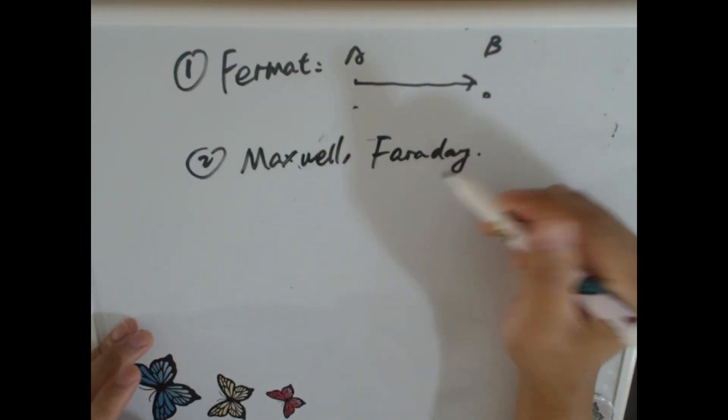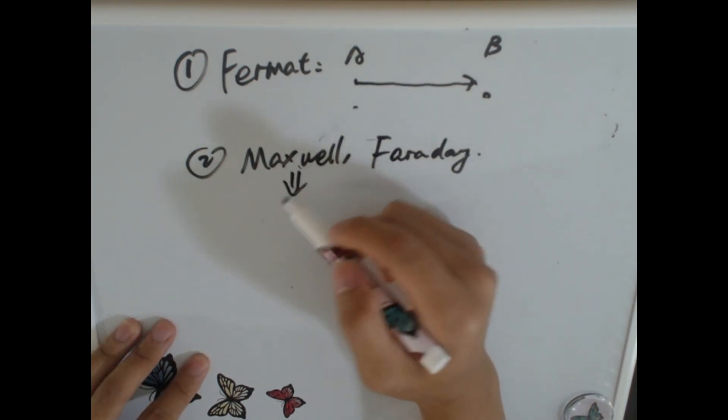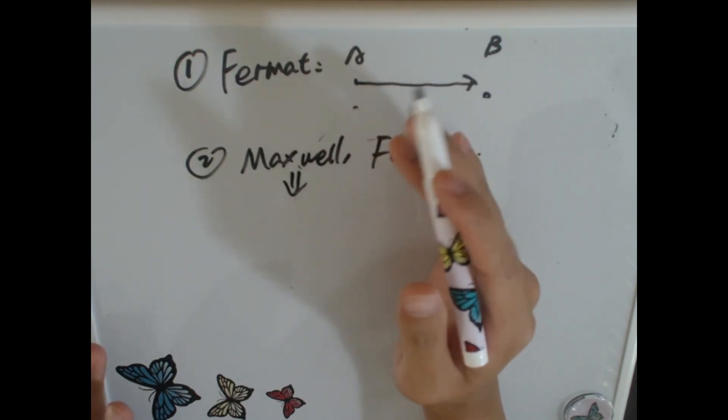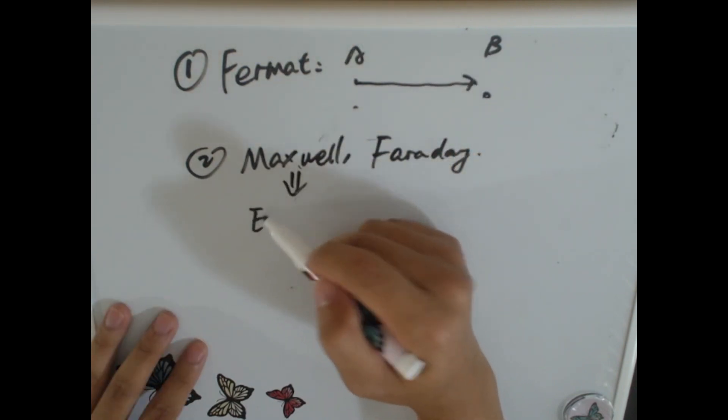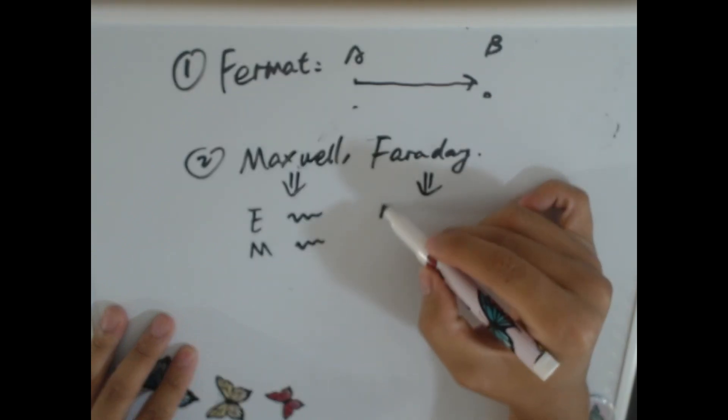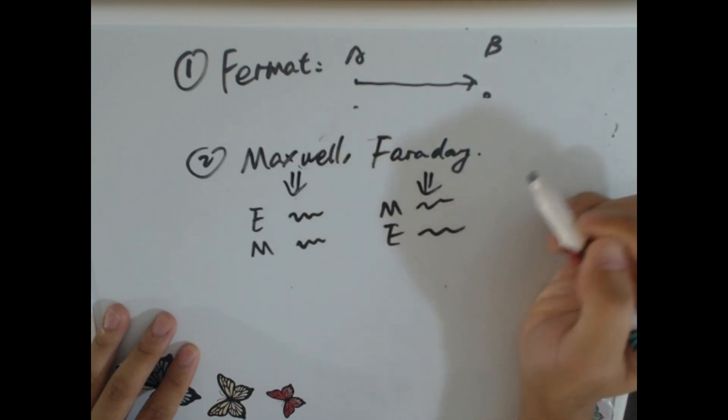You might have heard these two names in high school. This guy mentioned that in a substance, when the electric field changes, the magnetic field will change with it. And this guy mentioned quite opposite, which is when magnetic field changes, electric field changes with it, right?